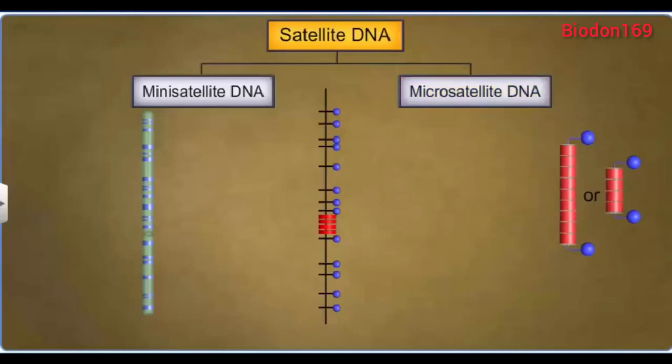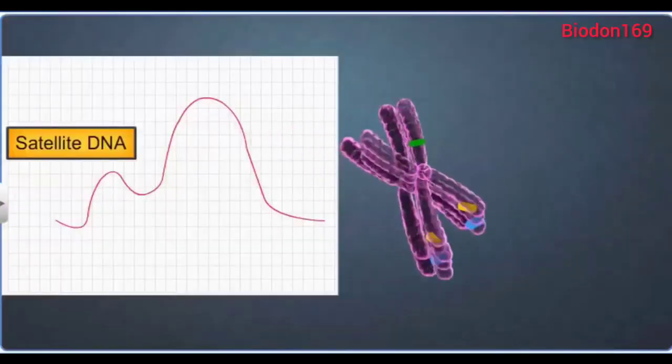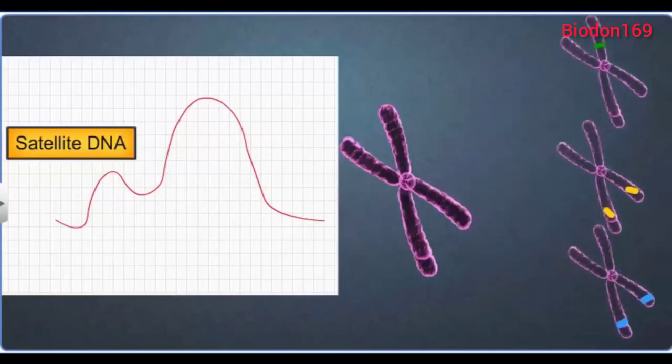Both mini-satellite and micro-satellite DNA act as molecular markers in the DNA fingerprinting technique. These satellite DNA do not show any impact on reproducing ability and exhibit a high degree of DNA polymorphism, or genetic variations, within a population.